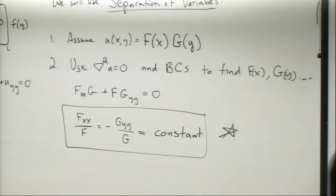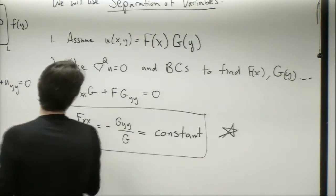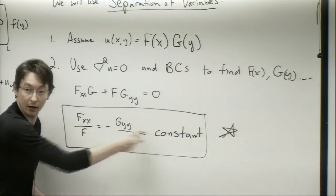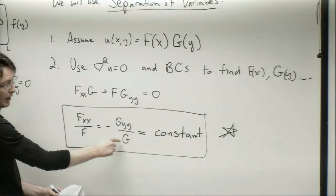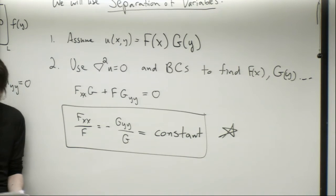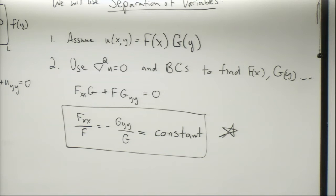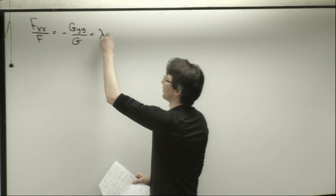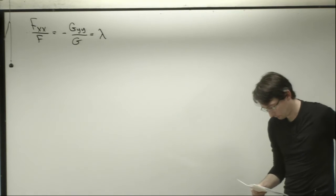So we have F''/F = -G''/G, and both equal a constant we'll call lambda — just like we used in ODEs. Our first ODE is F'' = λF. This is an ordinary differential equation — f double prime equals lambda f — and we know how to solve ODEs.